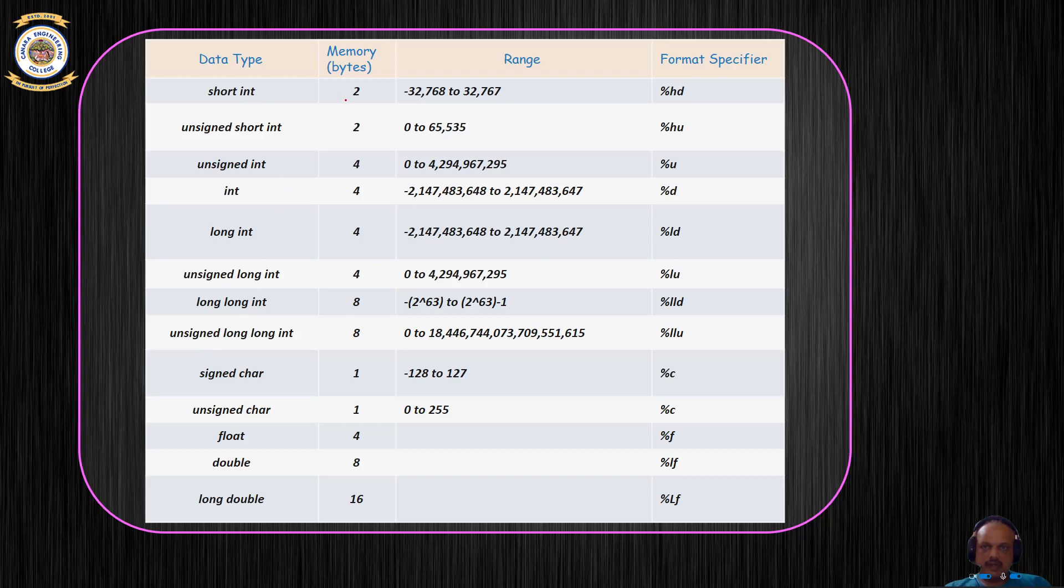Okay, so let us look into the memory allotment or memory usage of each of these data types. A short int takes two bytes, which means it can store numbers from minus 32,768 to plus 32,767. An unsigned short also takes two bytes, which means it can store numbers from 0 to 65,535.